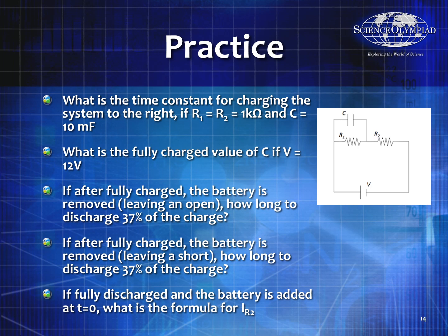If fully charged and the battery is removed leaving a short, how long to discharge 37% of the charge? It would be equal to one time constant. If fully discharged and the battery is added at T equals zero, what is the formula for IR2? These are some good example questions to work through.